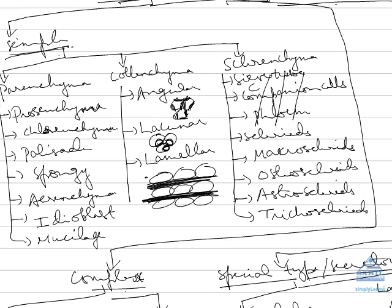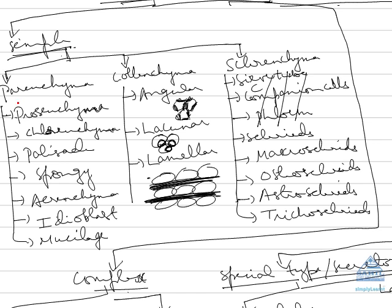Simple permanent tissues have stopped division. The first type is parenchyma — called so because they are a parental type, meaning the cells have just stopped dividing. Prosenchyma are non-dividing cells with intercellular spaces. Chlorenchyma are green in color and store chlorophyll. Palisade and spongy parenchyma are found in leaves and also contain chlorophyll.